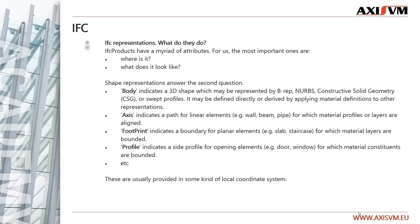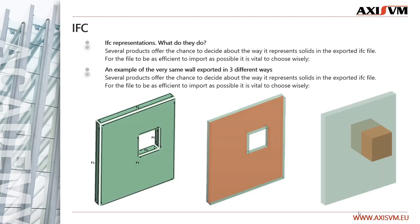Axis indicates a path for linear elements for which material profiles or layers are aligned. Footprint indicates the boundary for planar elements — slabs or staircases for example — for which material layers are bounded. Profile indicates a side profile for opening elements such as doors or windows, for which material constituents are bounded. These are usually provided in some kind of local coordinate system. Several software products offer the chance to decide about the way solids are represented in the exported IFC file. For the file to be as efficient to import as possible, it is vital to choose wisely.